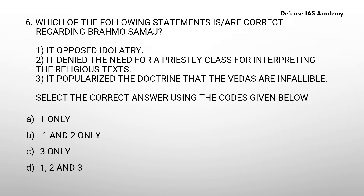Question number 6: which of the following statements is or are correct regarding Brahmo Samaj? Statement 1: it opposed child marriage. Statement 2: it denied the need for a priestly class for interpreting the religious text. Statement 3: it popularized the doctrine that the Vedas are infallible. Select the correct answer using the codes given below. Option A: 1 only. Option B: 1 and 2 only. Option C: 3 only. Option D: 1, 2 and 3. The answer is option B: 1 and 2 only.